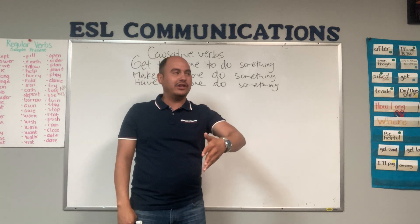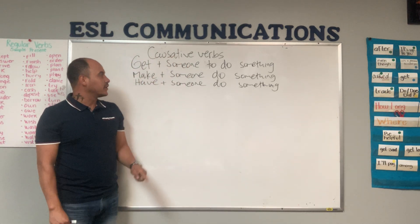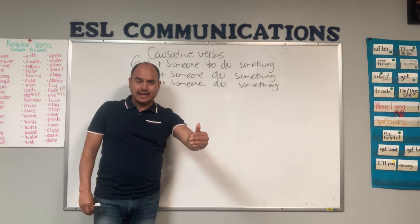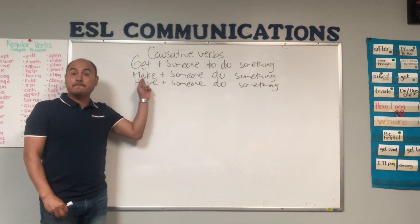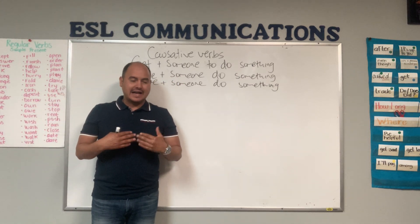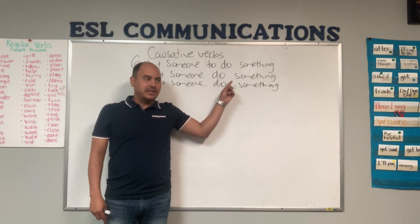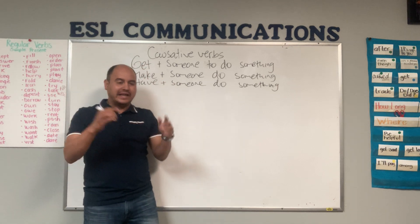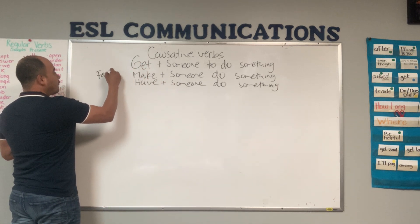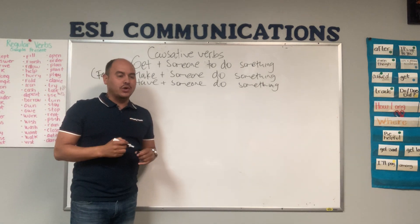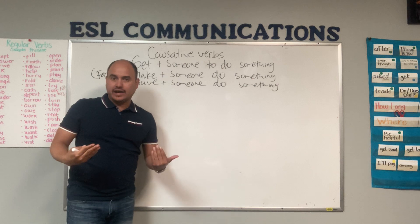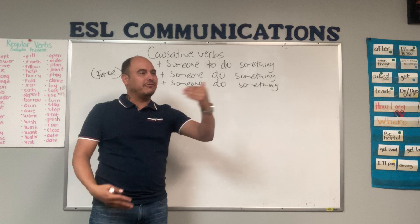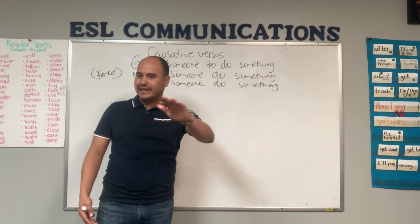Force someone to do something. So, first one: get someone to do something — conseguir que alguien haga algo. Second: make. ¿Qué es el verbo make? Hacer. Make someone do something. And then force — forzar a alguien que haga algo. El get es conseguir, provoke. Conseguir que alguien haga algo.